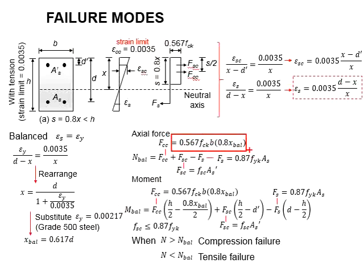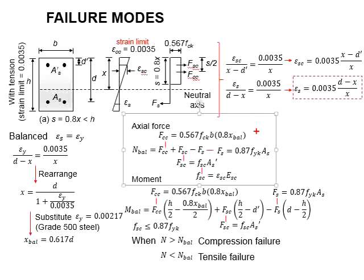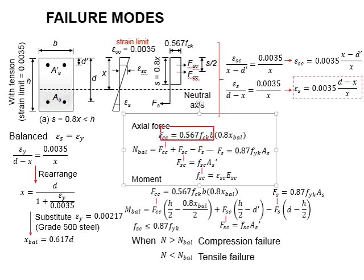x-balance is determined from the earlier equation and multiplied with the width of the section, giving you the FCC equation. The compressive force due to the compression steel is determined by the stress in the compression steel multiplied by the area of the compressive steel. The stress in the compressive steel is determined by multiplying its strain with the modulus of elasticity, and that strain can be obtained from the formula shown. As for the tensile force in the steel, it is determined by the design yield strength of the steel multiplied by the area of the steel. Substituting the relevant values, you are able to obtain the axial force under the balance conditions.